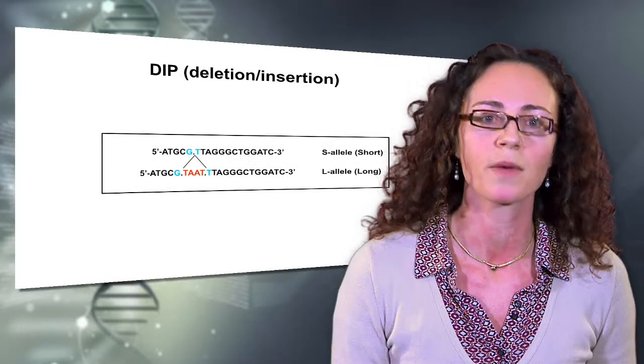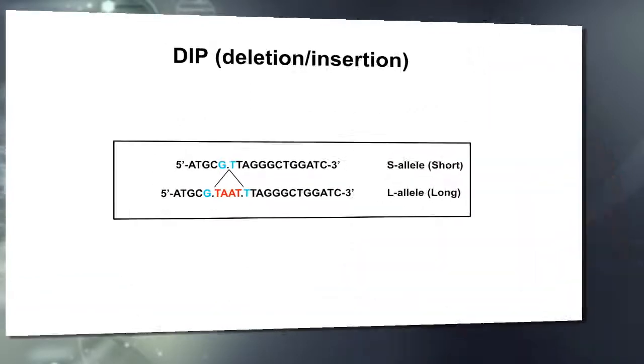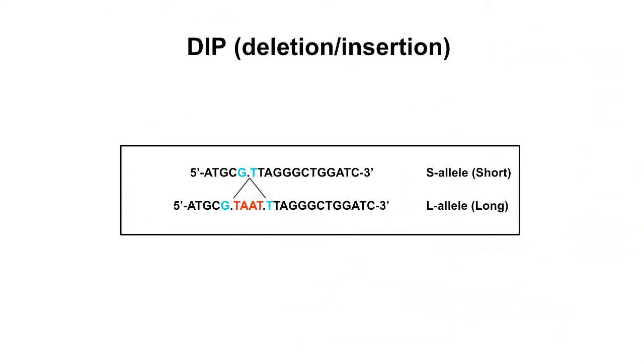DIP polymorphisms are biallelic polymorphisms of a core sequence mostly between 3 and 15 base pairs. This sequence can be either present determining the allele L or absent in the allele S. In the human genome, we expect to have several millions of DIPs and several hundreds are located close to STR markers.